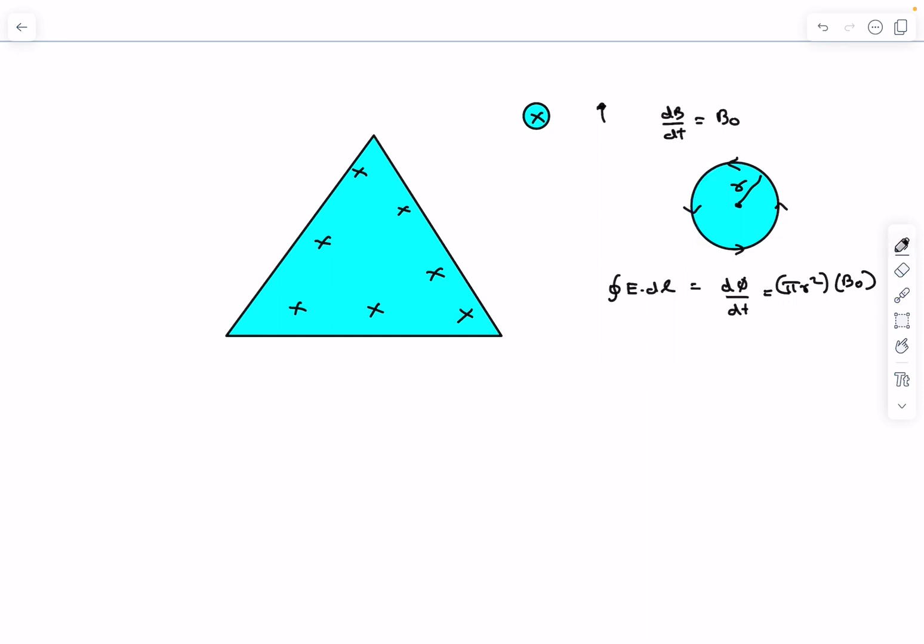And now due to radial symmetry we can assume E to be constant throughout the loop and take it out of the line integral. The line integral of dℓ will simply give you the answer as 2πr, and the induced electric field comes out to be B0 divided by 2 times r.